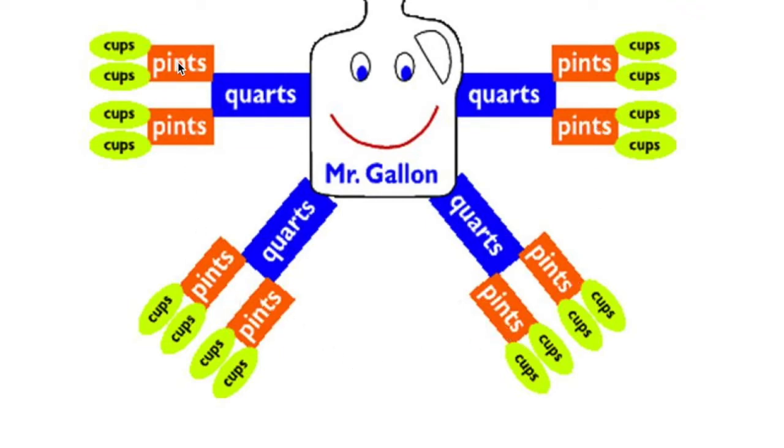Now let's go even smaller into cups. Well, two cups equals one pint, and let's see how many cups equals one gallon. One, two, three, four, five, six, seven, eight, nine, ten, eleven, twelve, thirteen, fourteen, fifteen, sixteen cups equals one gallon.